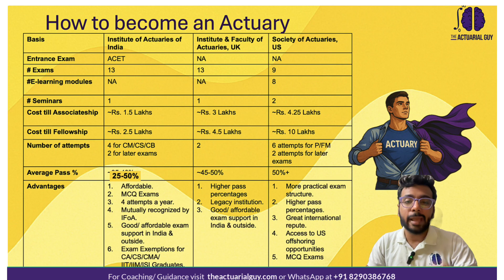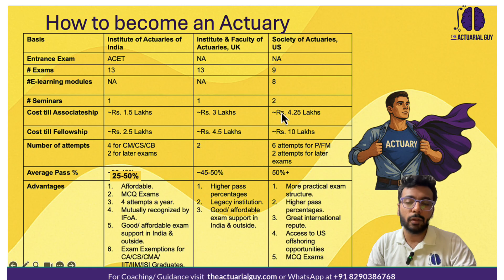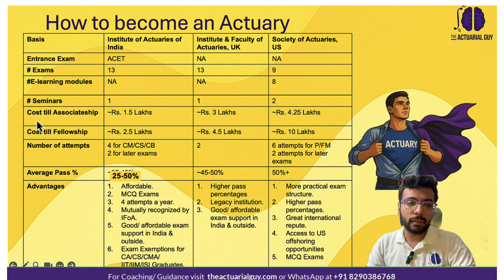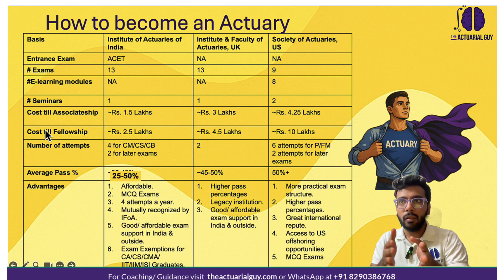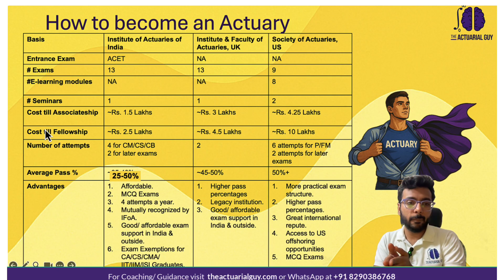SOA believes that exams alone are not the best way to test all your skills, so they offer a flexible, practical blended curriculum to qualify as a fellow actuary. In terms of cost, the Society of Actuaries is the most costly. The fees cover the full path through to associateship and fellowship — the two levels of qualification for becoming an actuary.